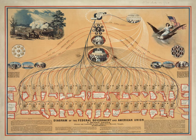The federal government is composed of three distinct branches: legislative, executive, and judicial, whose powers are vested by the U.S. Constitution in the Congress, the President, and the federal courts, respectively. The powers and duties of these branches are further defined by acts of Congress, including the creation of executive departments and courts inferior to the Supreme Court.